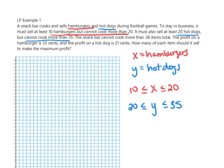They can't cook more than 38 items total, so the hamburgers plus the hot dogs has to be less than or equal to 38: X plus Y is less than or equal to 38. Those are your constraints for this problem.